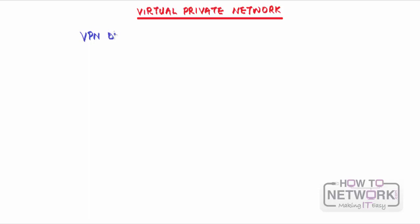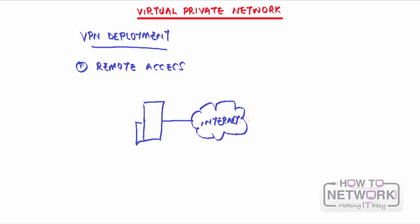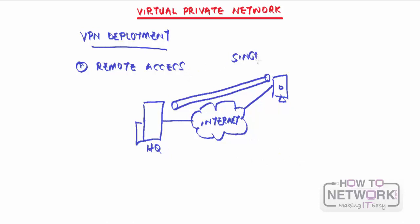There are three general ways by which VPNs can be deployed. The first is known as remote access. Remote access VPN allows telecommuters or single users to connect to a remote destination network. Imagine your HQ is connected to the internet, and a user is working remotely. Remote access lets this user establish a secure connection to the HQ to access the company's resources. Remote access VPN is basically meant for single users.